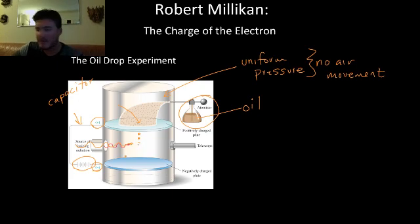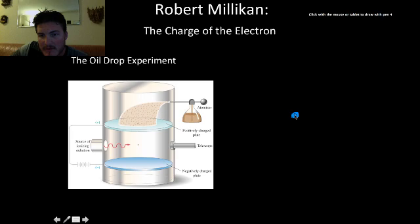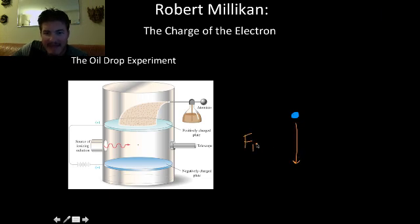So here's the experiment. He was able to use the telescope to make these small measurements and to measure the velocity of an oil droplet. And what he found, using basic physics, is that there is a downward force acting on the oil droplet. And that downward force is equal to the mass of the oil droplet multiplied by the acceleration due to gravity.